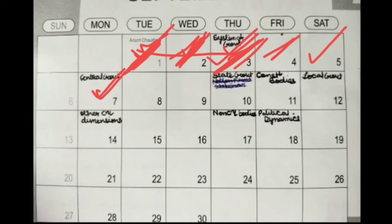In this one week, I completed the system of government and central government. Central government included President and Vice President on day one, Prime Minister and Central Council of Ministers, Cabinet Committees, Parliament, Parliamentary Committees, Forums, Groups, and the four Judiciary chapters on day five — so central government is over.